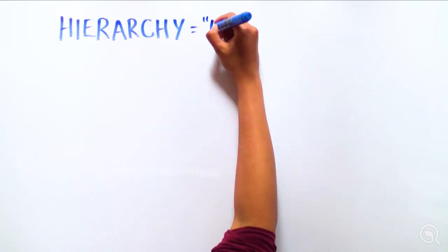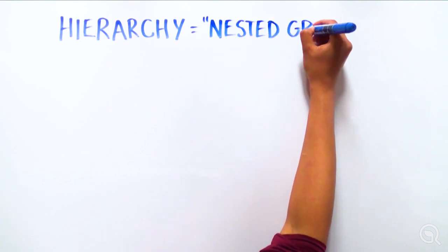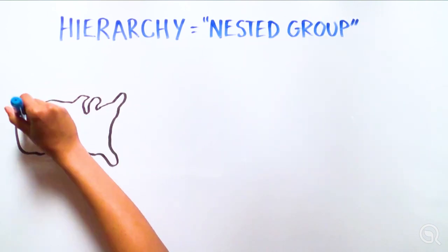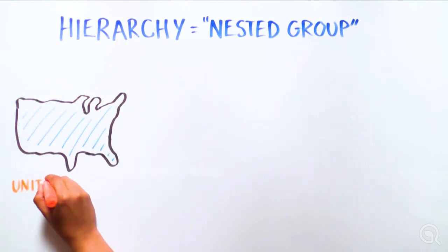Each living system is organized as a hierarchy, or a nested group within a group, meaning that each bigger group includes the smaller groups below it.